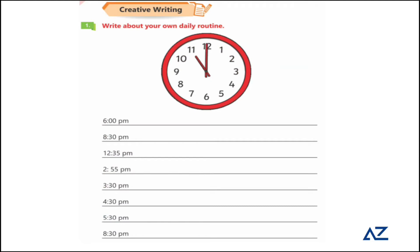Write about your own daily routine — what you do in the morning from 6 to 8:30. Here we are also talking about the evening (PM), so write what you do then as well. You can write about both your morning and evening routines.